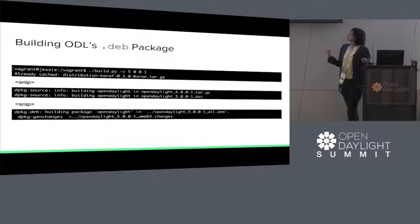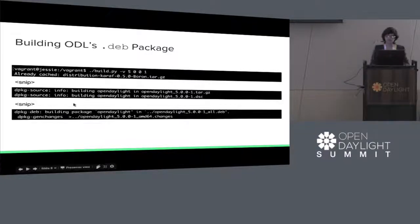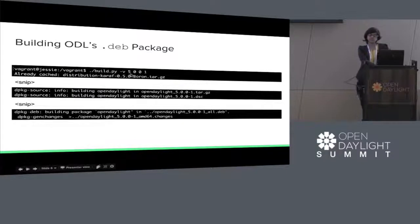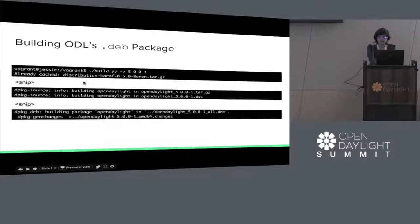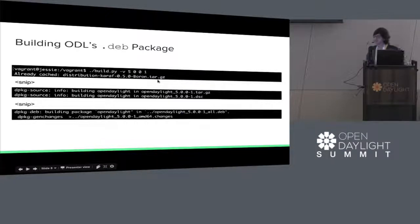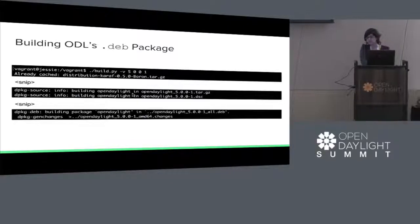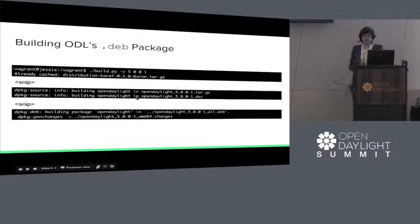To build a .deb package, we execute build.py with arguments for major version, Boron release, minor version, patch version, and the .deb version we want. Since I already had the .tar.gz file downloaded, it says already cached — this is what cache.py does. Finally in the end, we see that the .deb is being built.